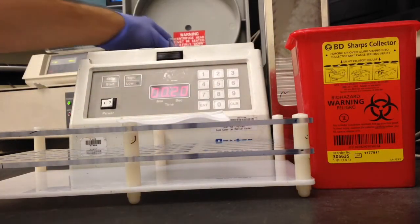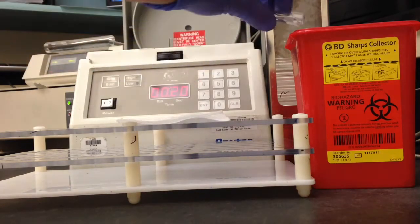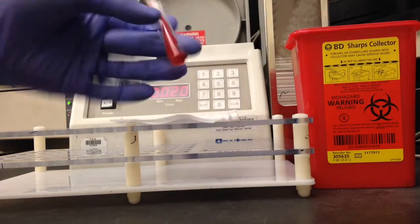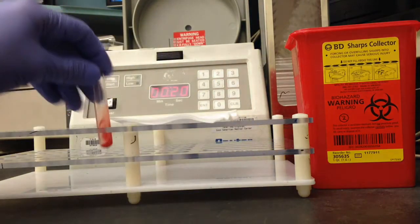And then after it's done you're just going to take it out and you're just going to decant it and pour off the excess saline and dab it on the 4x4 gauze just to get as much of the saline off as possible.